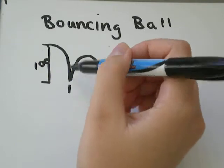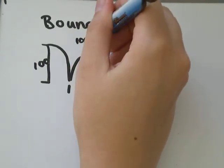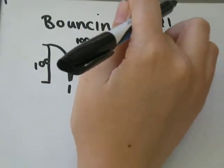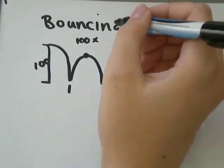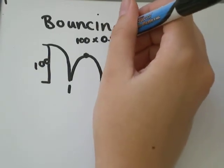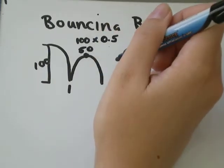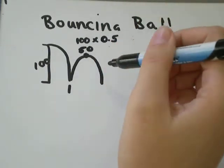If it was dropped from 100 meters, its height up here would be 100 times 50%. Well, 50%, you want to change that to a decimal. So it would be 50 divided by 100, which would equal to 0.5. So when you do that, you should get 50 cm is the height after one bounce.